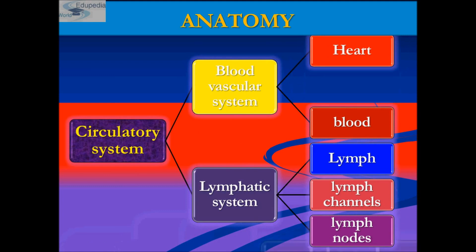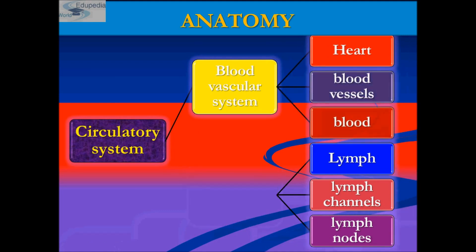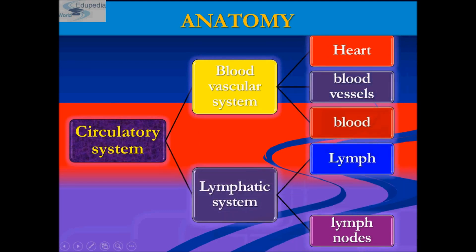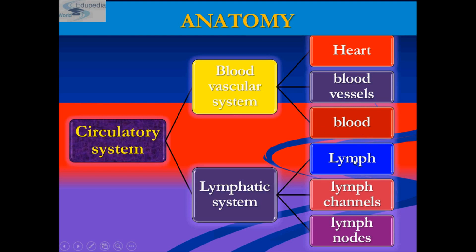The circulatory system is of two types: the blood vascular system and the lymphatic system. The blood vascular system consists of heart, blood vessels, and blood, whereas the lymphatic system consists of lymph, lymph channels, and lymph nodes.